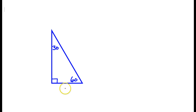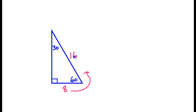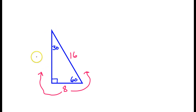For example, if the short leg was 8, the hypotenuse should be double that — so the hypotenuse is going to be 16. If you take the short leg and multiply it by radical 3, that should give you the long leg. So this would be 8 radical 3.